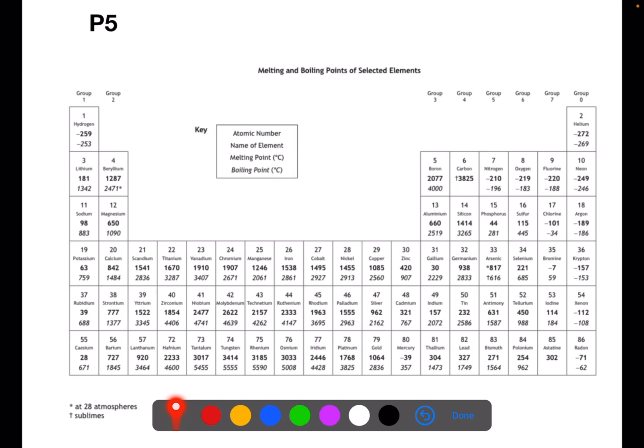You can see that a few of the values have different symbols beside them. So beryllium has a star beside it for its boiling point. This means that it only boils at this temperature at 28 atmospheres, so that's an increased pressure. Carbon has this symbol here and it says underneath it sublimes. This means that carbon moves from a solid to a gas without ever being a liquid.